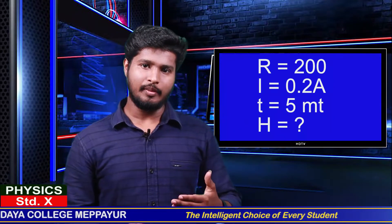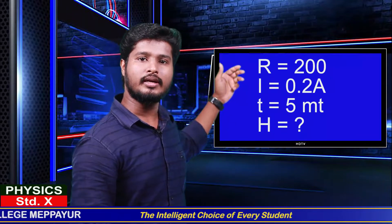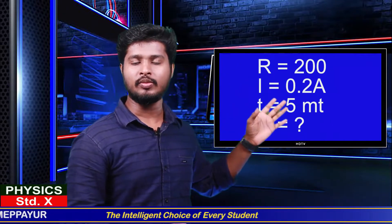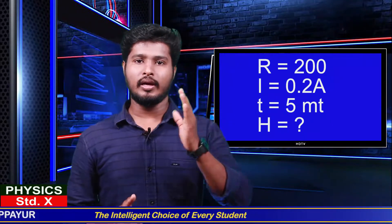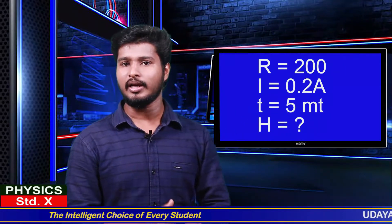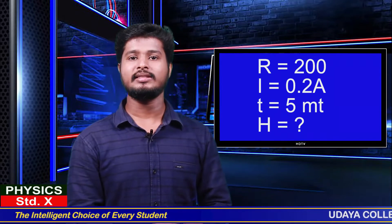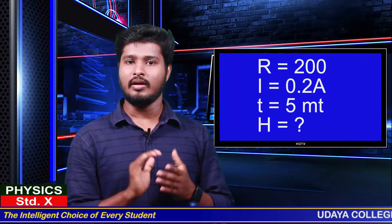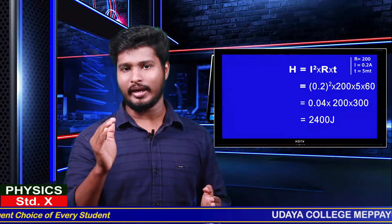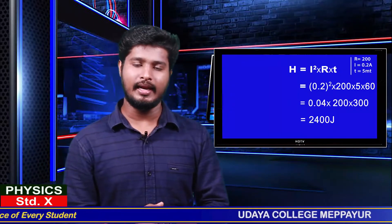We have to get the result. What is the result? I, R, and T. We learn the result of I and R and T. The formula is H sum equals I squared R T.